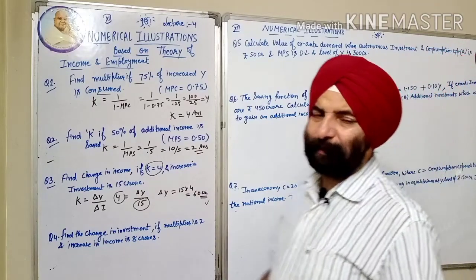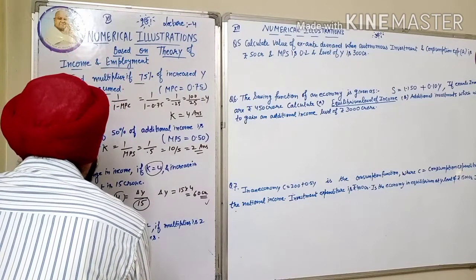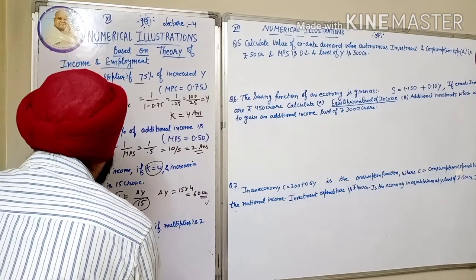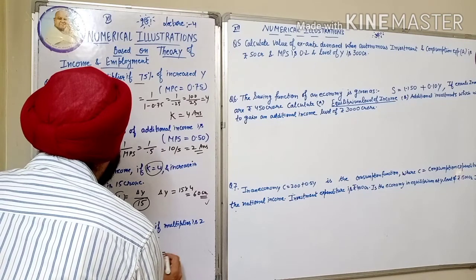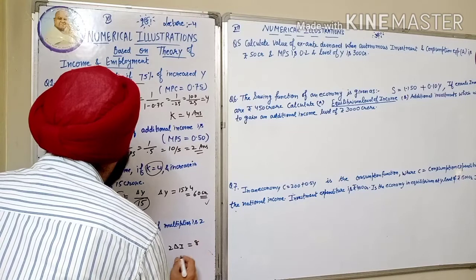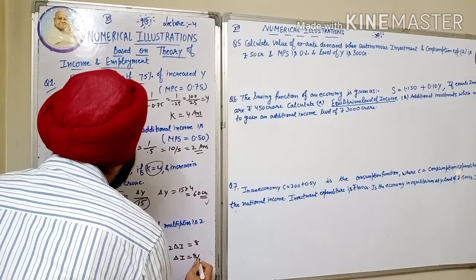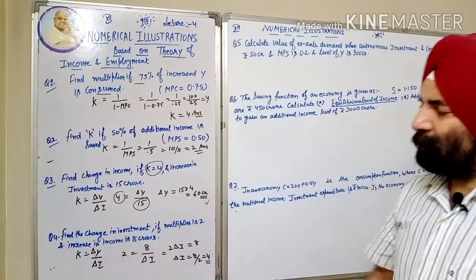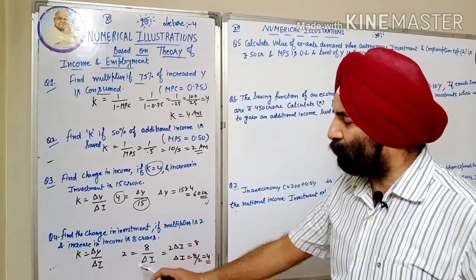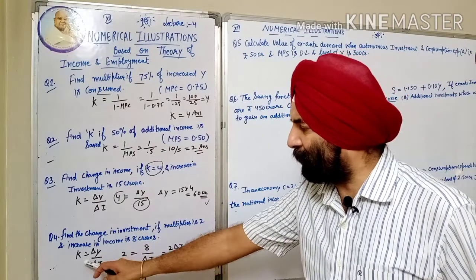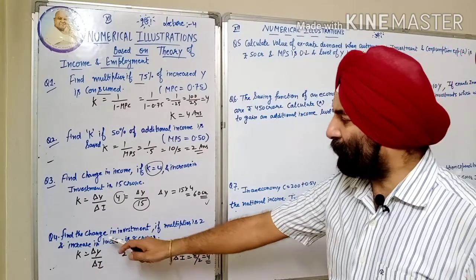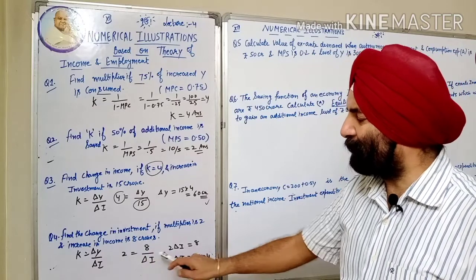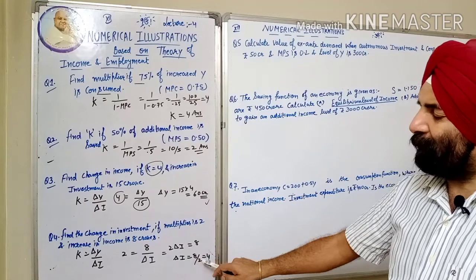इसमें भी formula लिखो: K is equal to delta Y upon delta I. यहाँ Find the change in investment if multiplier is 2 and increase in income is 8 करोड़। K = 2, delta Y = 8, so 2 into delta I = 8, change in investment is equal to 8 upon 2 = 4 करोड़।